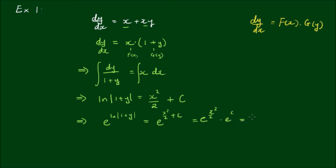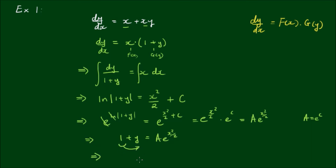We can write this more conveniently as capital A times e to the x squared on 2, where A equals e to the c. Of course, e has the effect of cancelling out the log, so we have 1 plus y equals A times e to the x squared on 2. And to get the explicit solution, we move the 1 to the other side: y equals A times e to the x squared on 2 minus 1.